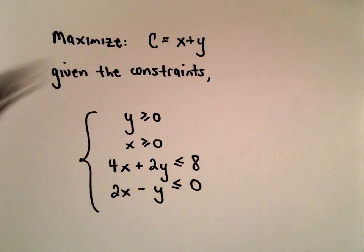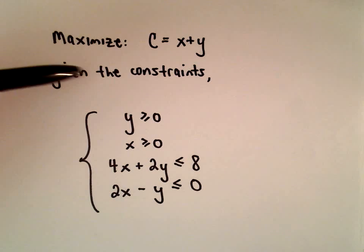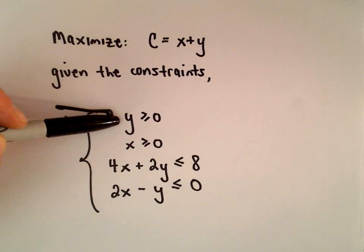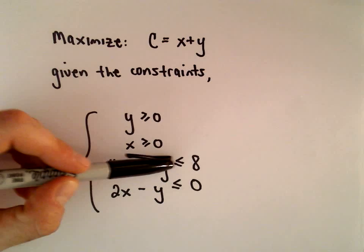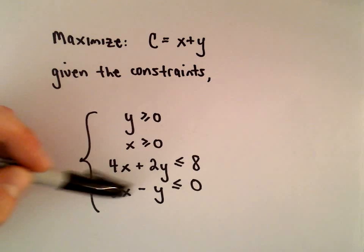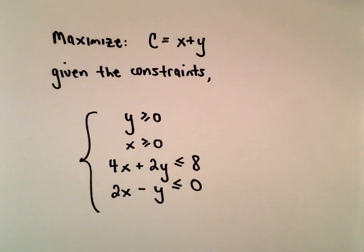Okay, here we're going to maximize the function C equals x plus y, given the constraints that y has to be greater than or equal to 0, x has to be greater than or equal to 0, 4x plus 2y must be less than or equal to 8, and 2x minus y has to be less than or equal to 0.